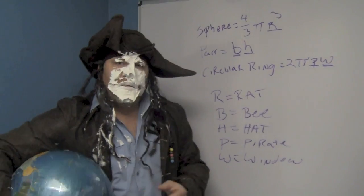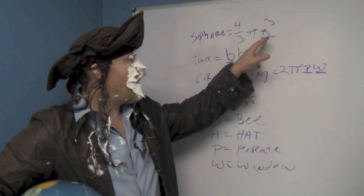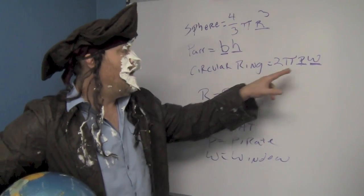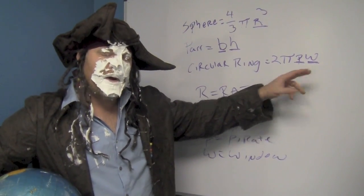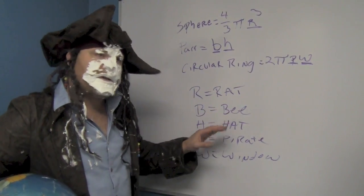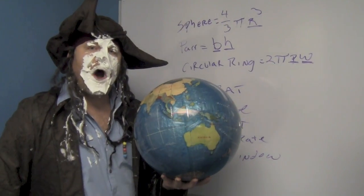So folks, that's how you memorize math formulas. The first thing that you do is go through and pick out all the variables and decide: R is going to be a rat, B is going to be a bumblebee, H is going to be a hat, P is going to be a pirate, and W is going to be a window. And then, after you do that, after you have all the pictures for your variables done, you go through and create stories.